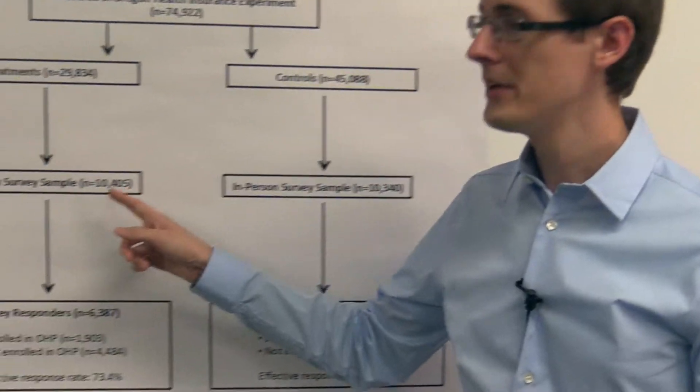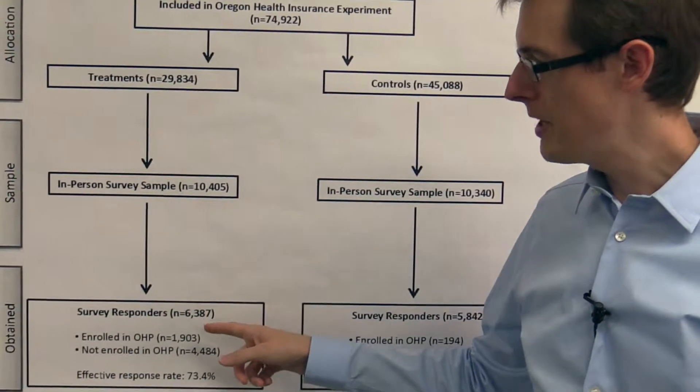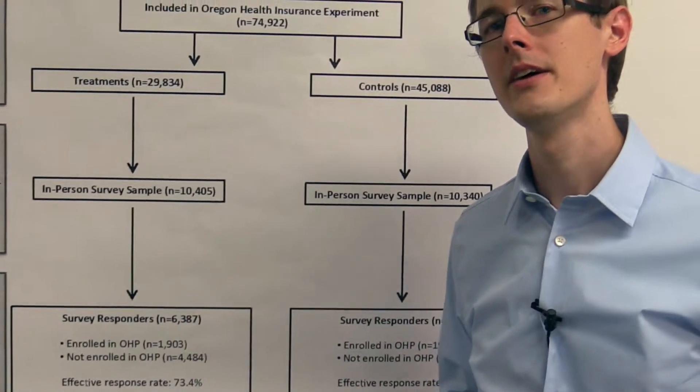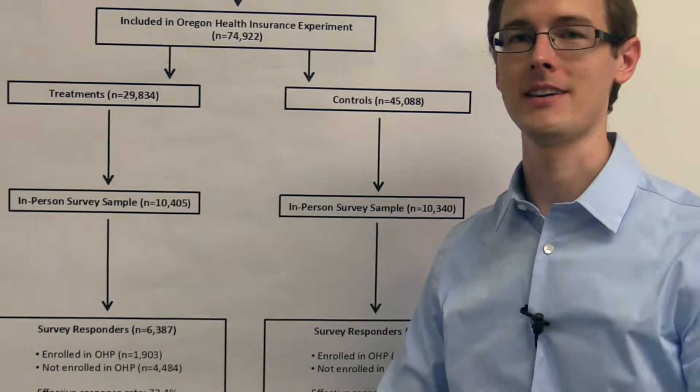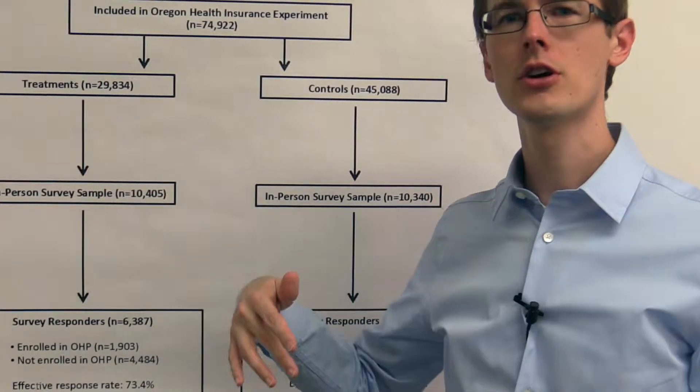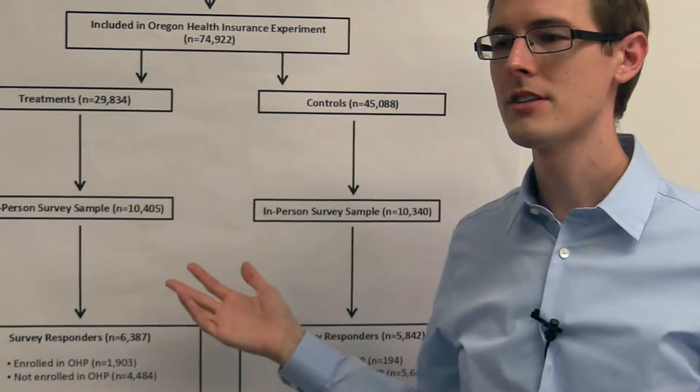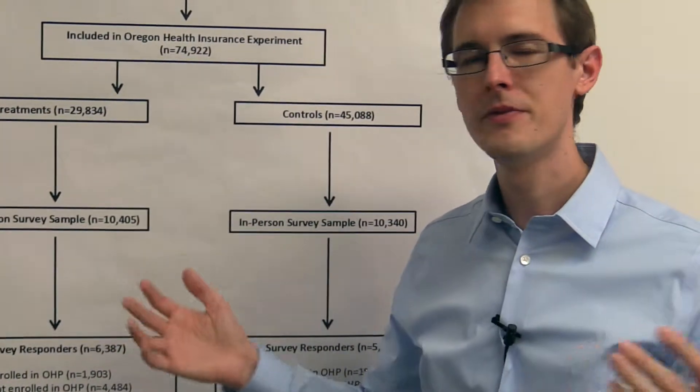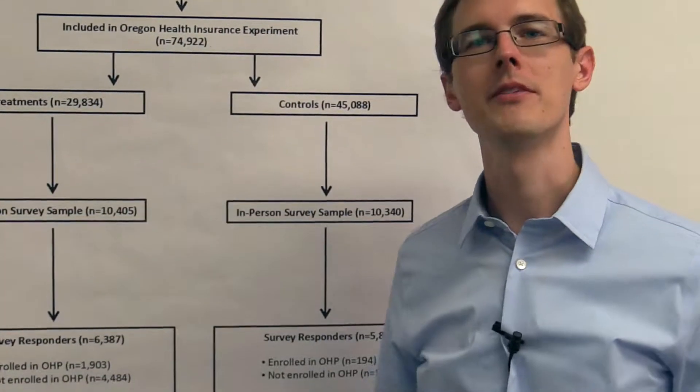But now suppose that in the treatment group, the people who don't respond are the ones for whom Medicaid has the biggest effect. So they got Medicaid a year ago, this survey shows up in their mail, and they're just so happy, they're just really healthy, they're just like, whatever, trash.